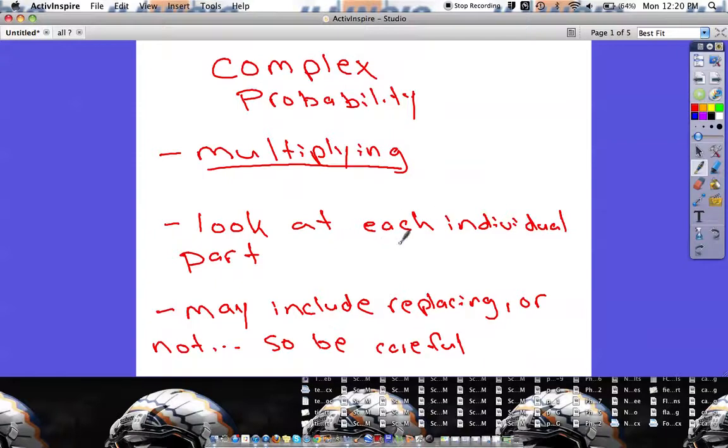When we do this, we're still going to think about what we did in the last part where we think, well, the probability of this is what fraction, the probability of this is what fraction. But in this case, we're going to be multiplying them together to see what the probability of both things happening would actually be, or three things happening, or four things happening.